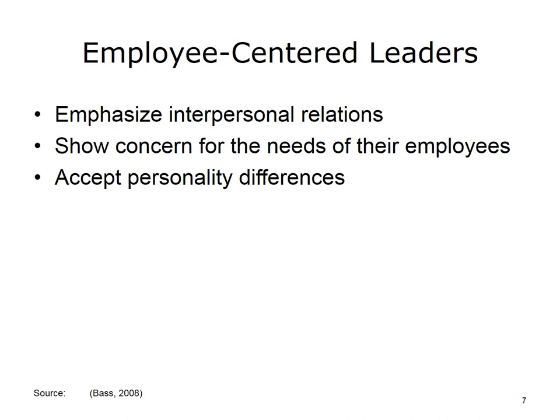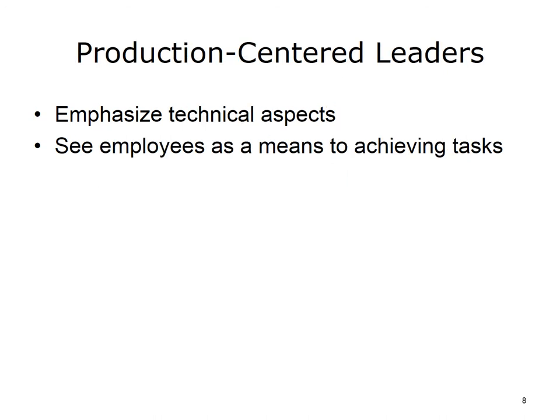When researchers looked at employee-centered leaders, they found that those types of leaders emphasized interpersonal relations. The employee-centered leader shows concern for the needs of his or her employees and accepts the traits and personality differences encountered among different employees in the organization. Leaders with a production-centered focus, on the other hand, emphasized the technical aspects of the job and focused on accomplishing just that task. The employees represent a means to achieving the end of the tasks for the leader, and that is their primary direction.